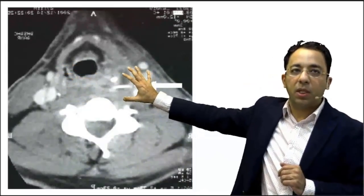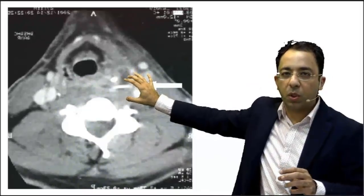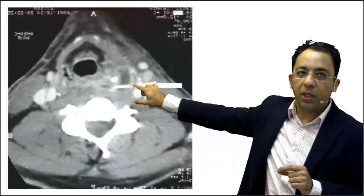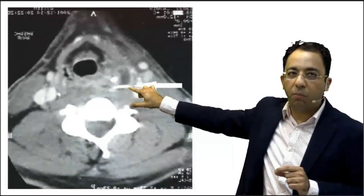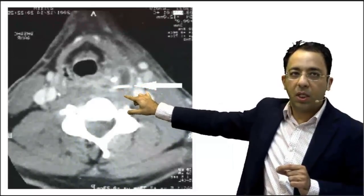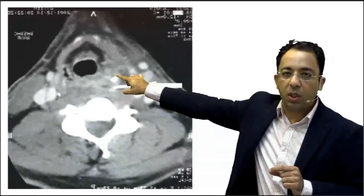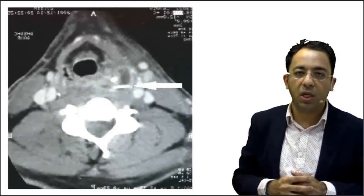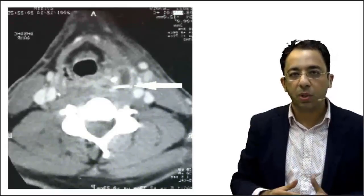Now look at the other side — can you see a linear radiopaque structure inside it, looking like a bone? This is how a fish bone would look on CT. And you can see there is some fluid collection around it, suggesting abscess formation with wall enhancement. So you have a collection in the piriform sinus with a radiopaque foreign body evident on CT scan, allowing us to make a diagnosis plainly on CT in this patient.